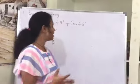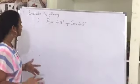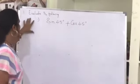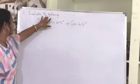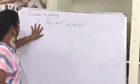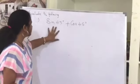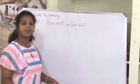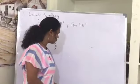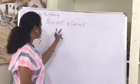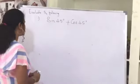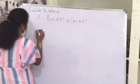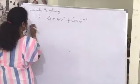Maths trigonometry exercise 11.2, the first question: evaluate the following. The first one is sin 45 plus cos 45 — we must find the value of sin 45 plus cos 45.